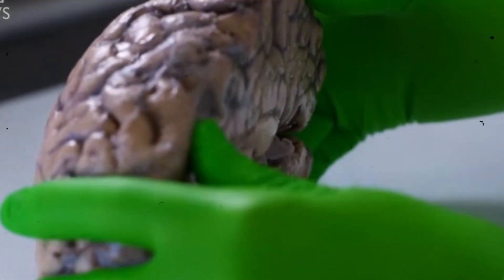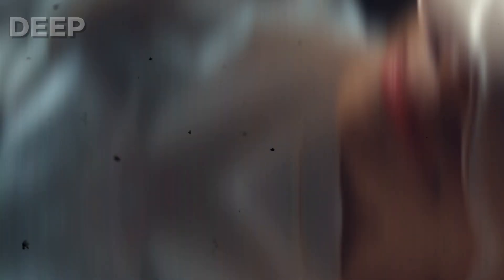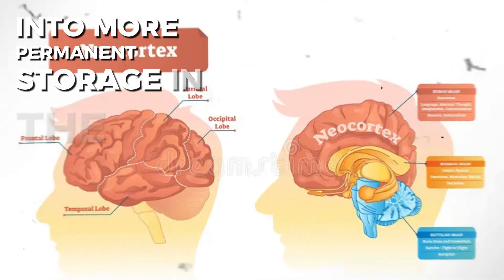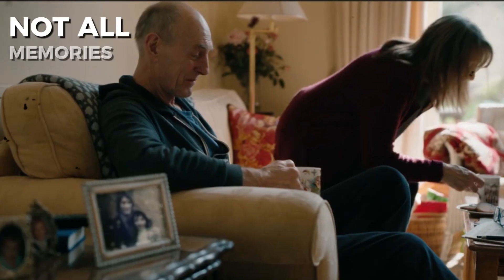While your brain is being scrubbed clean, another hidden process kicks in, one that decides which memories you get to keep and which ones vanish forever. Deep sleep isn't passive. It actively rearranges your memory, moving information from temporary holding zones like the hippocampus into more permanent storage in the neocortex. But here's the shocking part. Not all memories make it.